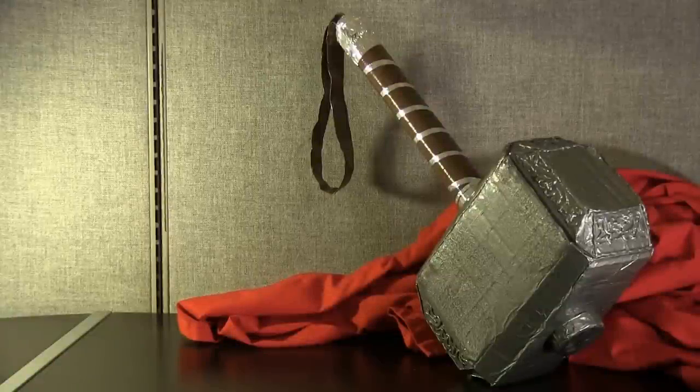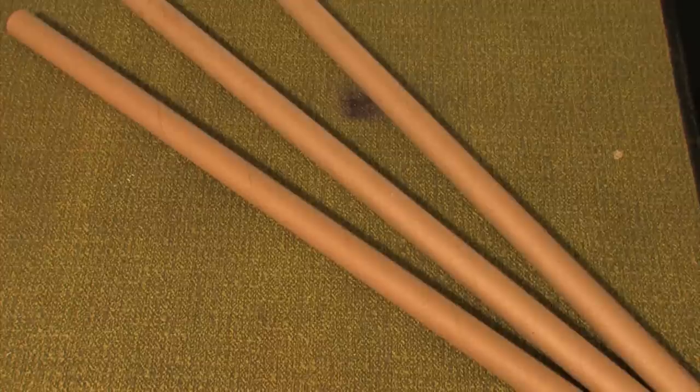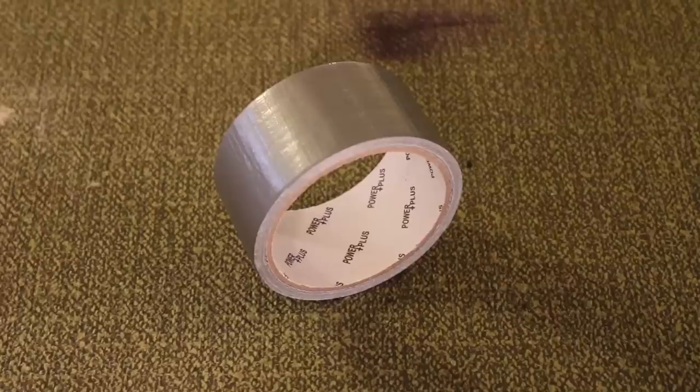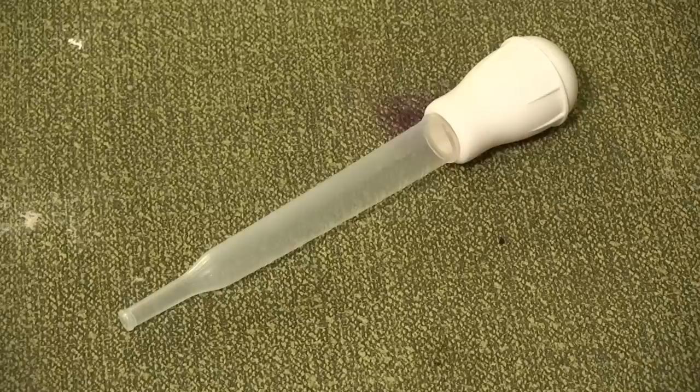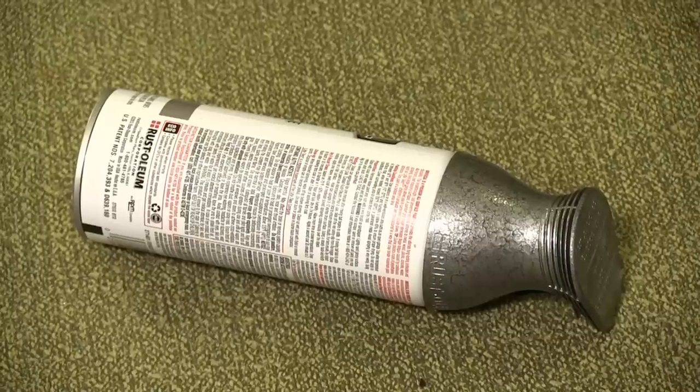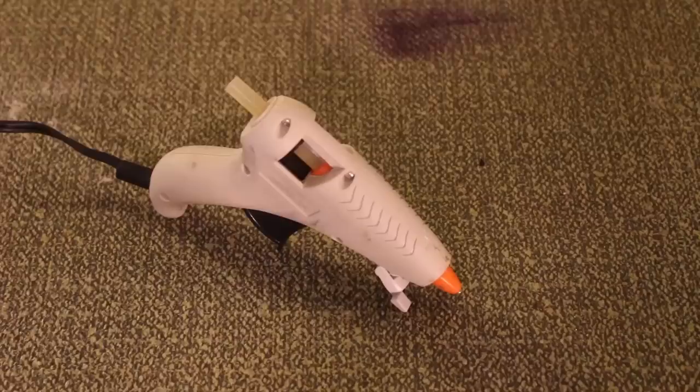Materials for this prop include cardboard, a gift wrap roll, aluminum tape, duct tape, adhesive foam squares, newsprint, a turkey baster, pewter forged hammer textured paint, and a hot glue gun.